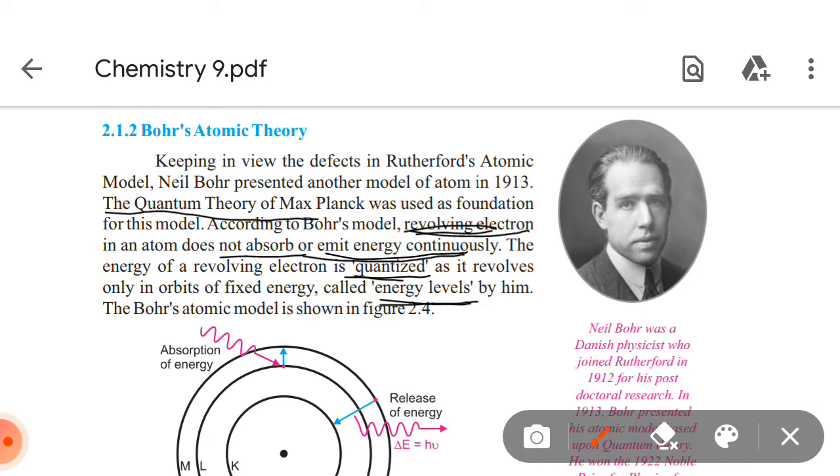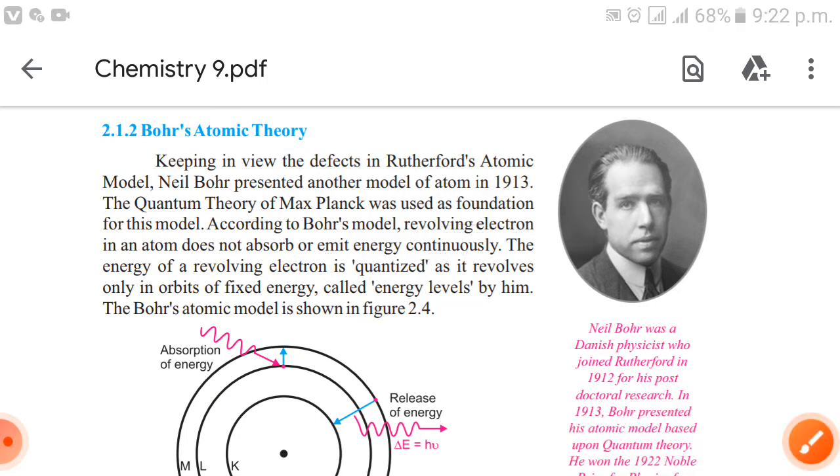The energy of a revolving electron is quantized as it revolves only in orbits of fixed energy called energy levels. The revolving electron's energy is quantized on a specific energy level. The Bohr's atomic model is shown in figure 2.4.